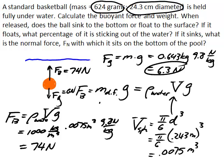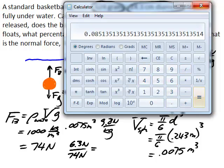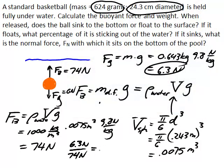And in fact, it turns out that how much of it is submerged in the water is equal to the ratio of its weight over the weight of water if it were fully submerged. So the ball, when it's floating on the surface of the water, will only be 8.5% submerged, which means that 91-92% of it is going to be sticking out of the water.